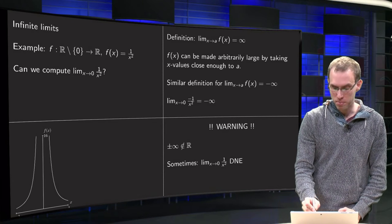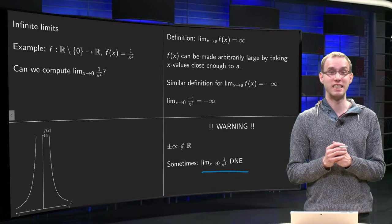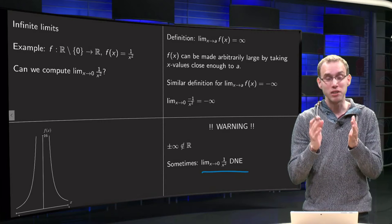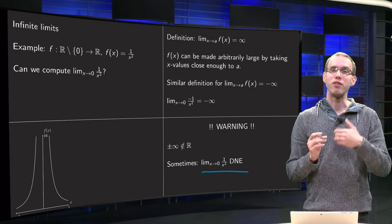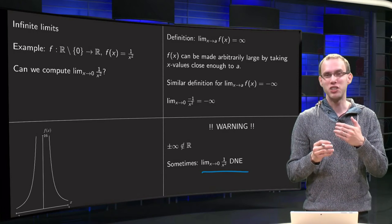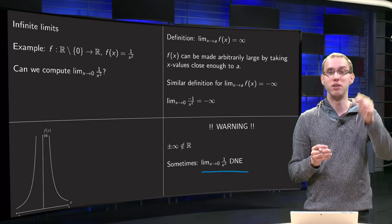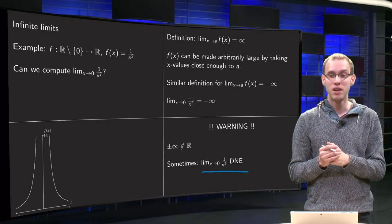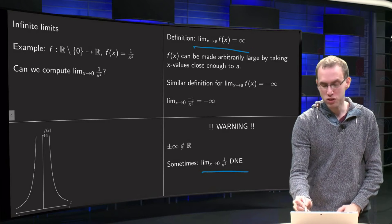Sometimes this limit is written as does not exist, because the outcome is not a number in R. However, we like to be able to make a distinction between functions which go up to plus infinity or go up to minus infinity, so that's why we adopt this convention.